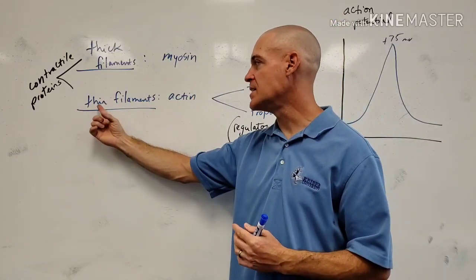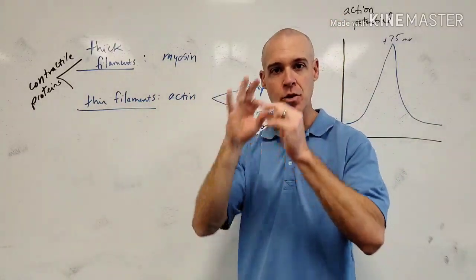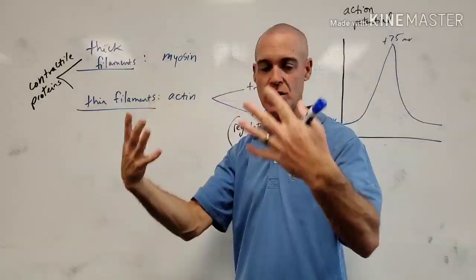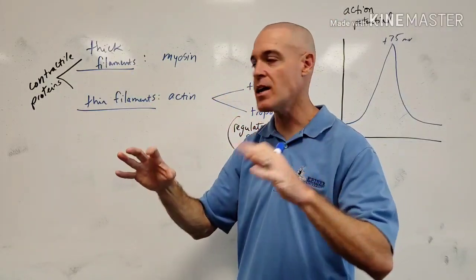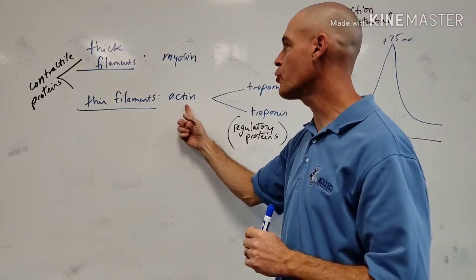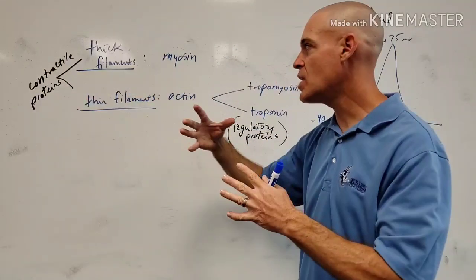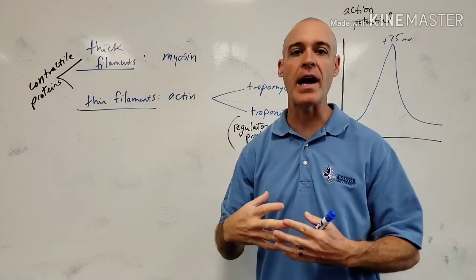Actin is referred to as the thin filament, because under a microscope it looks thin. Myosin is the thick filament, because under a microscope it looks thick. And these two are referred to as contractile proteins, which means they are directly involved in the contraction process.